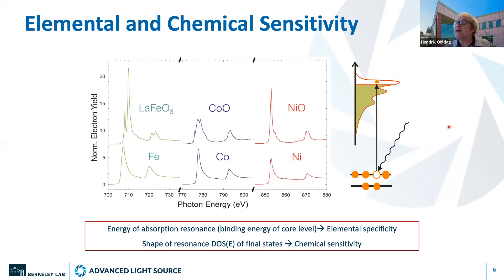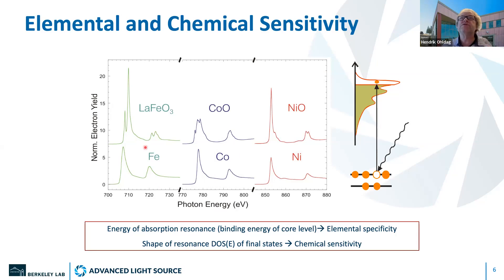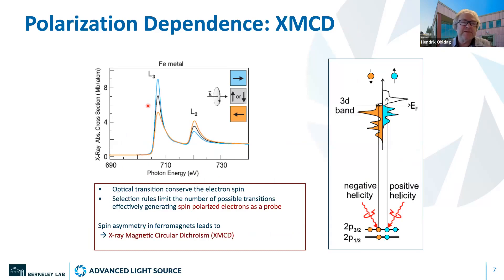The most important thing about X-ray microscopy is that you not only have the see-through vision, which allows you to penetrate materials and look through them, and the nanoscale resolution from the nanometer wavelengths, but you also have elemental and chemical sensitivity. That's probably the most important thing here, because X-ray microscopy is a bit more complex than regular microscopy — you need to go to a synchrotron, and there's a lot of effort involved. But what you really gain is that elemental sensitivity, because the absorption of X-rays is enhanced when you hit absorption resonances, where you excite core-level electrons into final states.